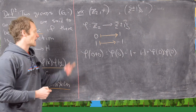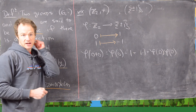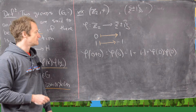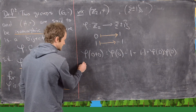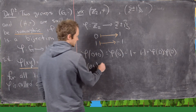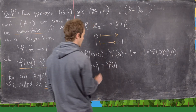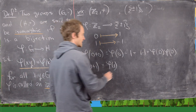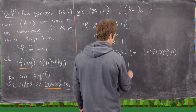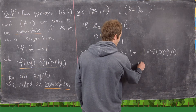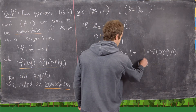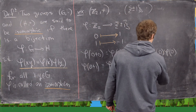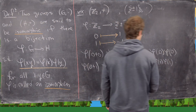We have three more things to check, but actually only two more since this is an abelian group. So phi(0 + 1) = phi(1) = -1, and notice that equals 1 × (-1) = phi(0) × phi(1). So the operations factor out of the map.